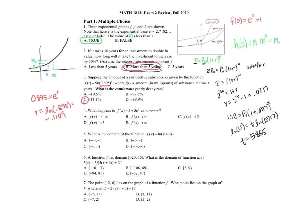What happens to the function 3 plus 5e to the X as X goes to negative infinity? Five e to the X is just a steeper version of e to the X, and then the graph is shifted up three. As we move to the left on the X axis — as X goes to negative infinity — the term 5e to the X approaches 0, so the Y value approaches 3. The function value F of X is going to approach 3 as X goes to negative infinity.